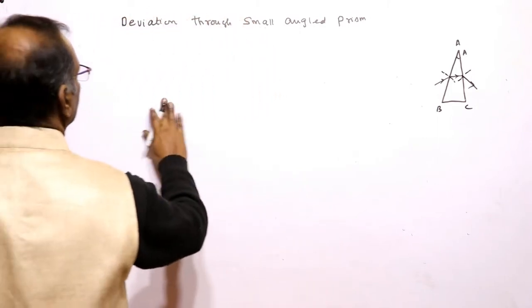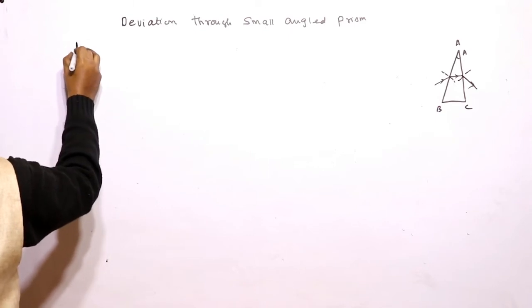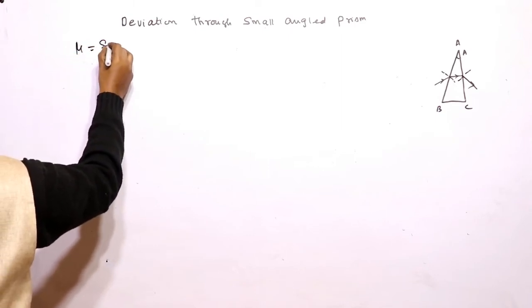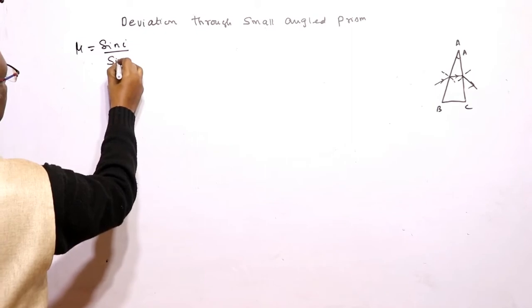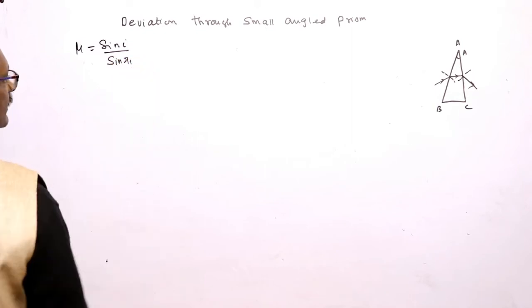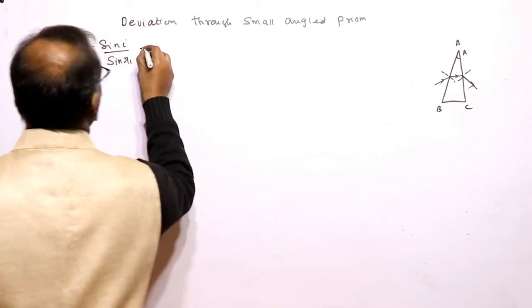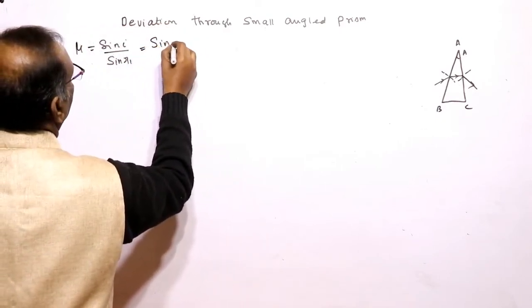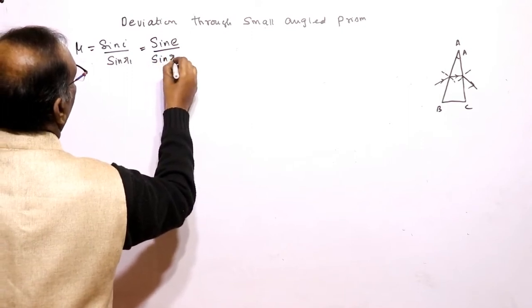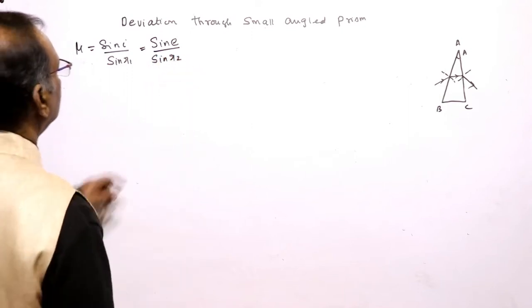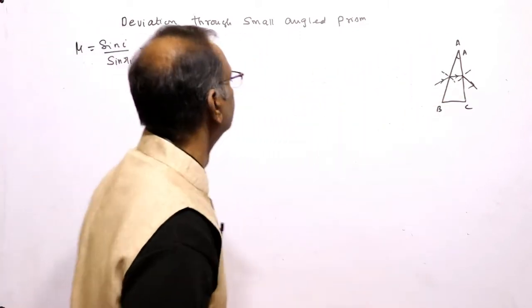Deviation through a small angled prism. Since we know mu is equal to sin of I divided by sin of R1 for the first face AB, and for the second face, mu is equal to sin of angle of emergence divided by sin of R2, where R2 is the angle of incidence at the face AC.